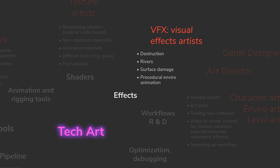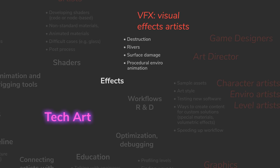There is also procedural environment animation — because some animation can be faked just by skipping the simulation completely and doing it in a shader, like clothes slightly moving because of wind turbulence.